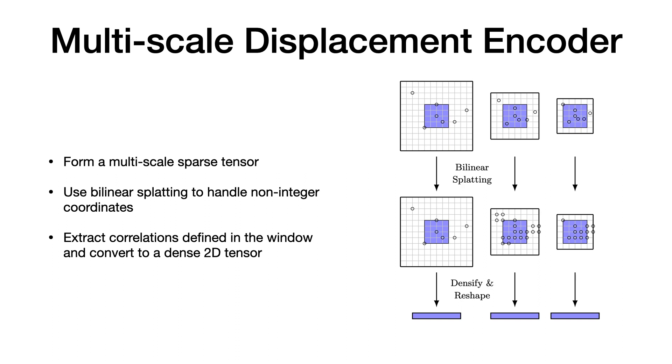To effectively encode and process the SCV, we first form a multi-scale sparse tensor by dividing the coordinates with different scalars. We then propose using bilinear splatting to propagate the non-integer correlations to the 4 nearest integer neighbors.